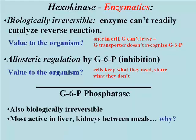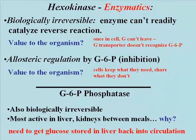Let's consider glucose 6-phosphate phosphatase. This reaction is also biologically irreversible, and the enzyme is only active in the liver between meals. Why? Because between meals it's necessary to mobilize stored glucose in the liver — that would be glycogen — and glucose 6-phosphate phosphatase is part of this process. It catalyzes the removal of the phosphate group so that glucose can cross the cell membrane by binding to the glucose transporter protein, allowing glucose to exit the liver and be transported to other tissues that need glucose for energy.